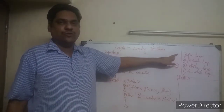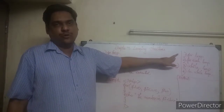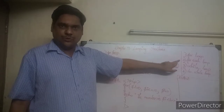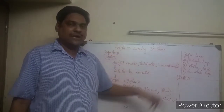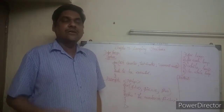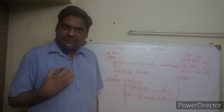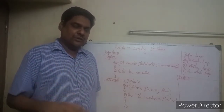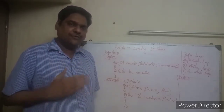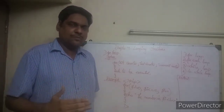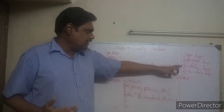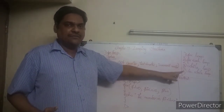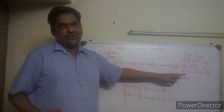For-each loop is used with arrays. While loop and do-while loop are used when you repeat based on a condition — if the condition is true it repeats, if false it stops. So when the repetition depends on a condition being true or false, you will use while loop or do-while loop.